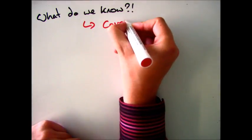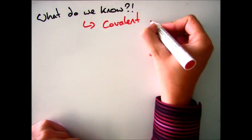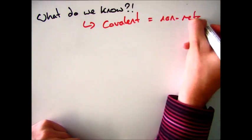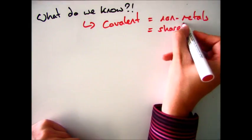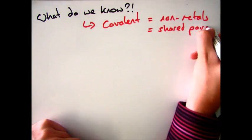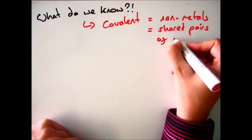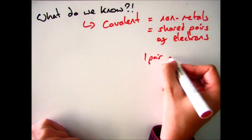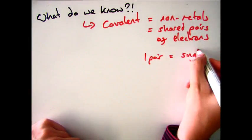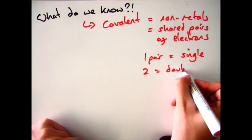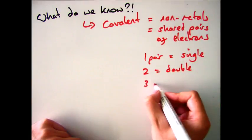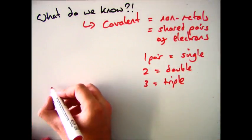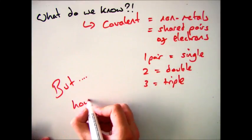So if we start off with a quick recap on what we know. A covalent bond is between non-metals. We also know that a covalent bond is a shared pair of electrons. You can have single bonds, which is one pair of shared electrons; double bonds, which is two pairs of shared electrons; and triple bonds, which is three pairs of shared electrons.